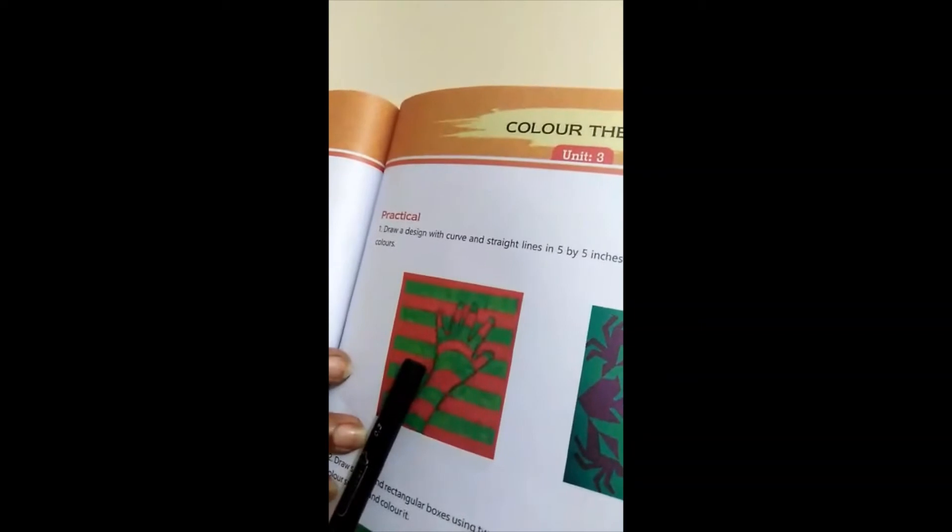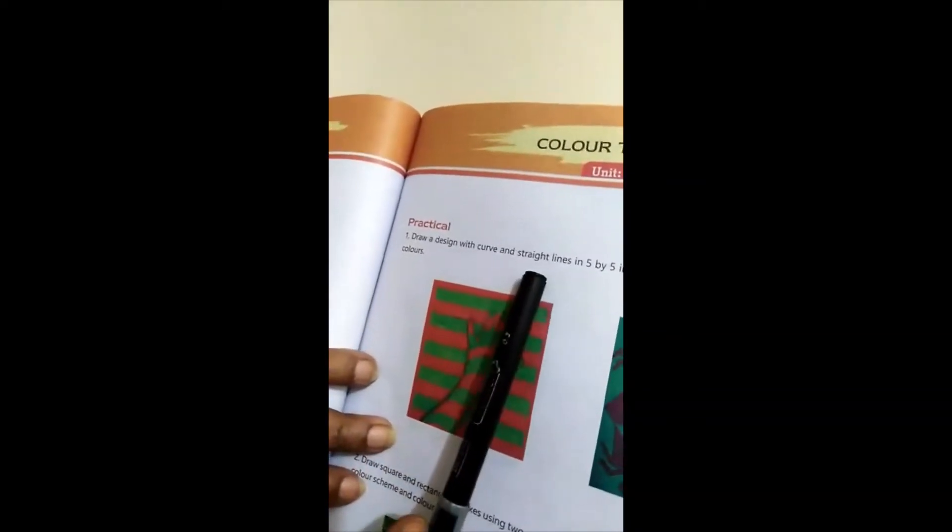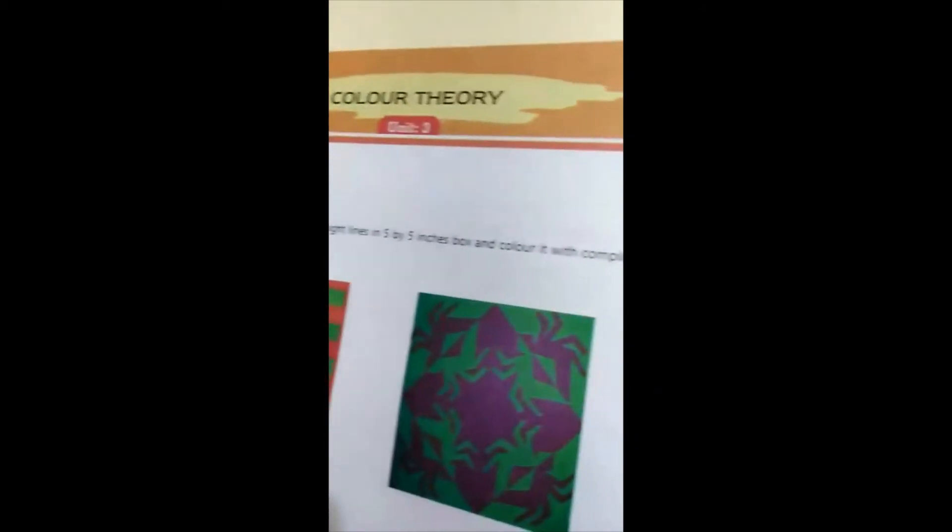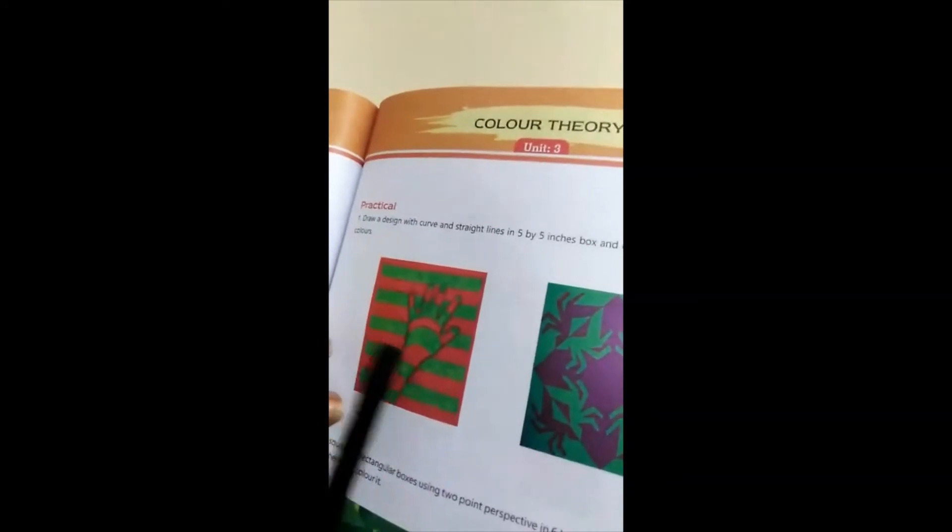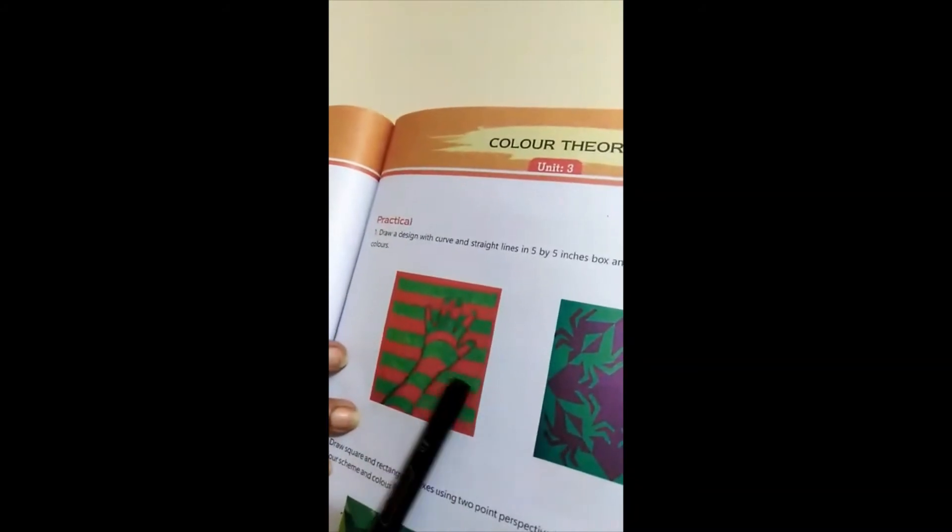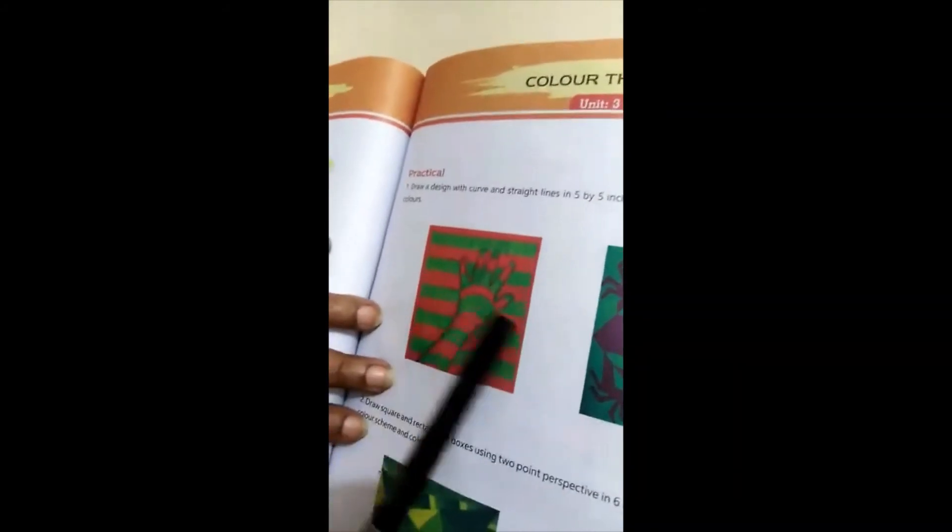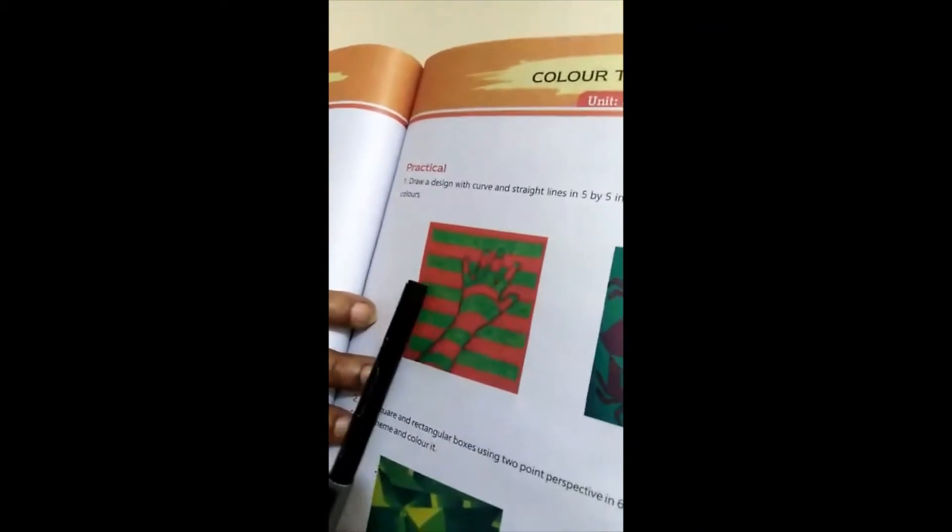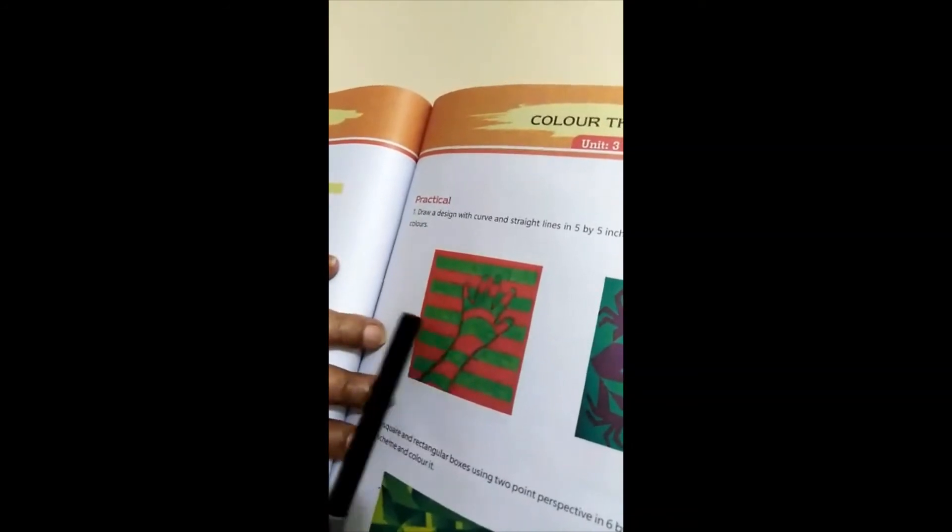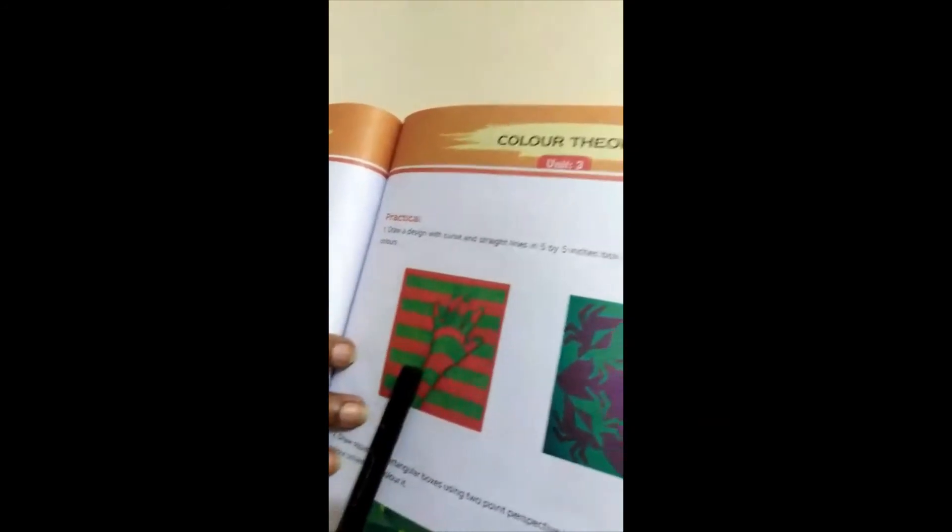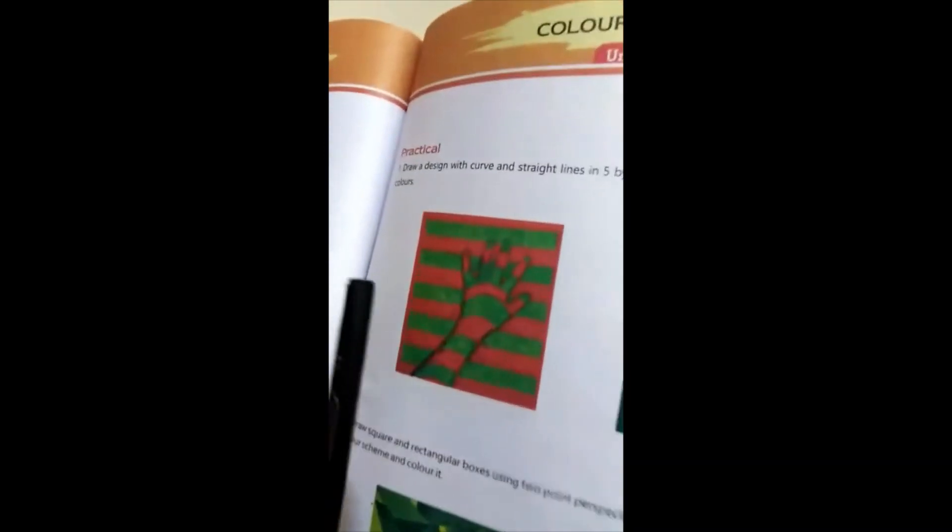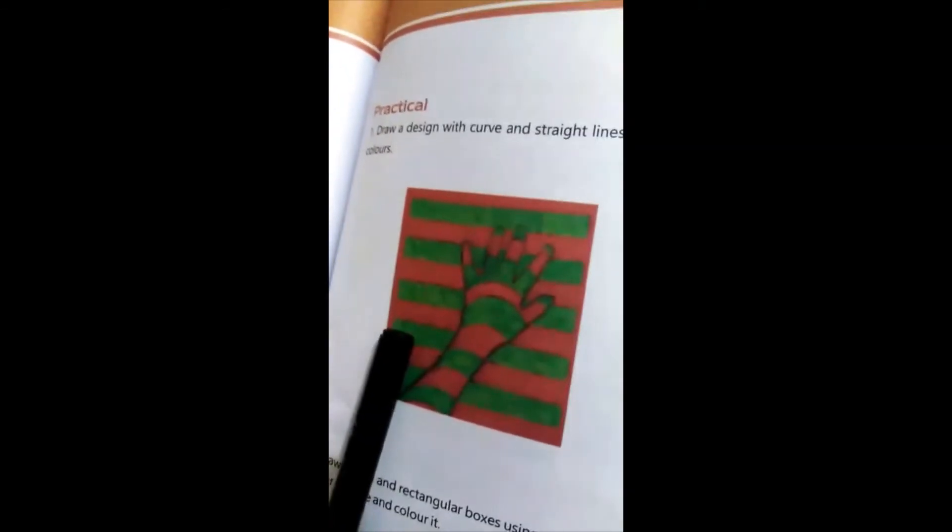The design should be five by five inches, and you have to put the color with the complementary colors. Complementary colors are the three colors which are opposite of each other. For example, red's opposite is green. They have given you the example.